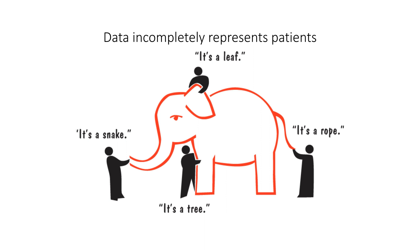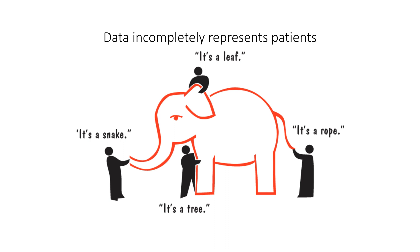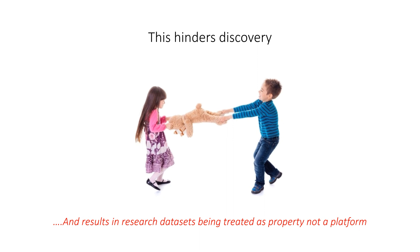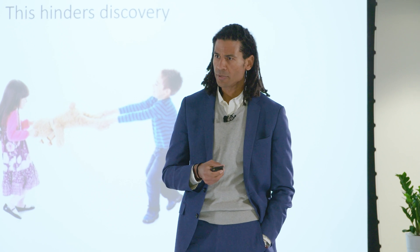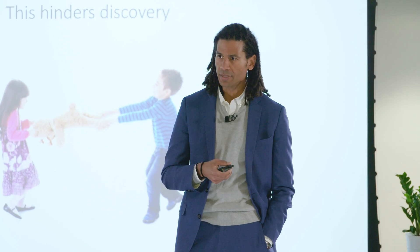The consequence of this is that the data we use in clinical research incompletely represents patients. We're like the blind men interacting with the elephant here. We get a cut of data that allows us to perfectly describe a tail, or a tusk, or a trunk, at the expense of a holistic understanding of who that patient is in data. And this doesn't just hinder discovery — it creates a very competitive culture in research. Researchers that have access to high-quality data sets treat it more like personal property than a platform that can facilitate discovery.